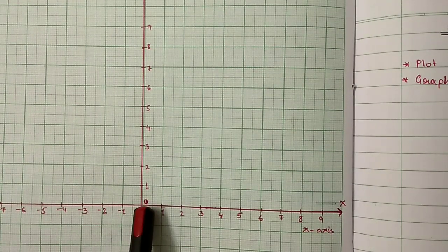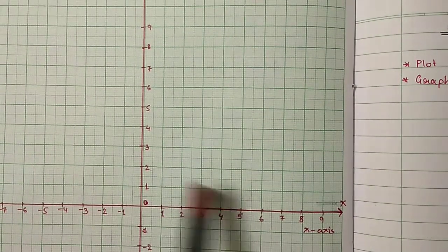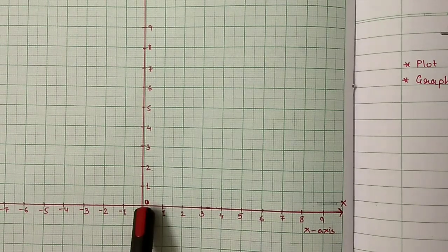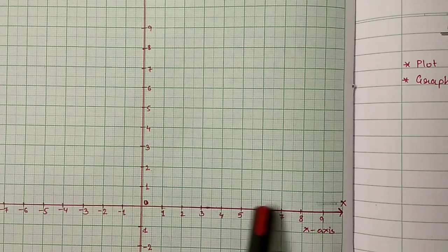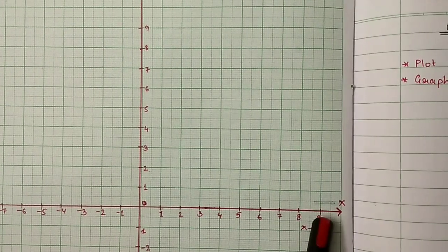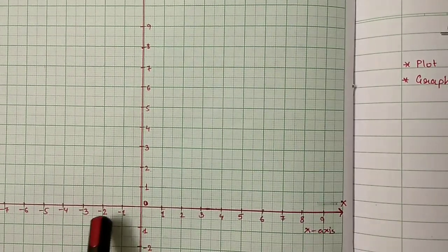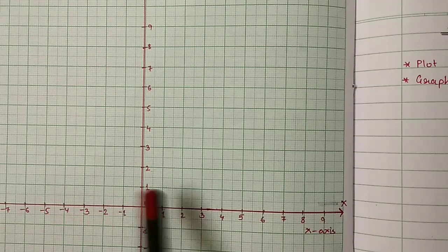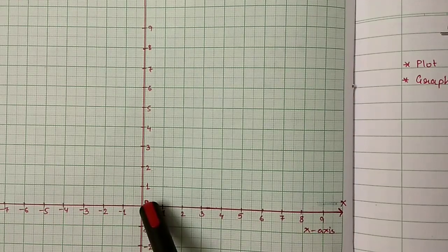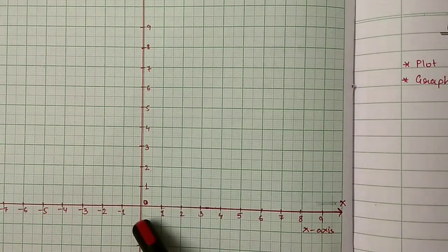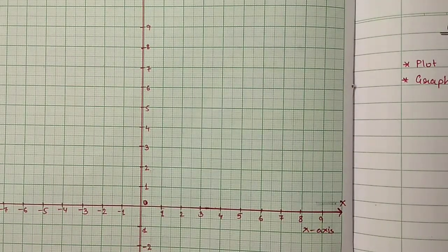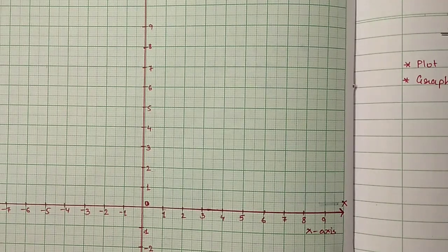This point we will take as the origin of these two number lines. Its coordinate will be (0, 0). The right side of this will be positive integers, the left side negative integers. Same way, up we take positive numbers and down we take negative numbers.